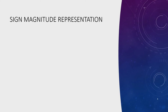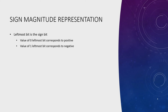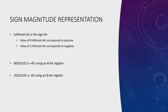So what exactly is signed magnitude representation? Like I said before, the leftmost bit is the sign bit: 0 corresponds to positive and 1 corresponds to negative. Let's figure this out using an 8-bit register that represents positive 45 and negative 45.